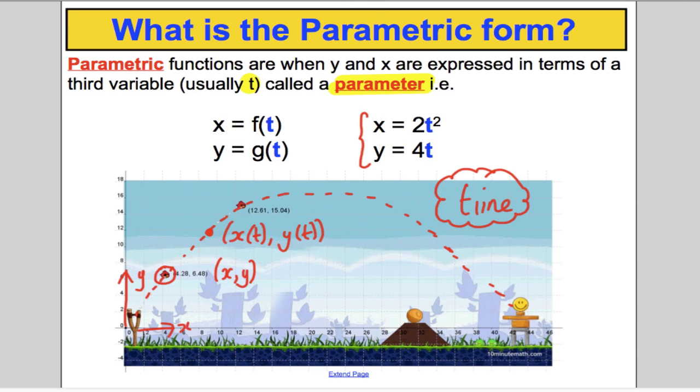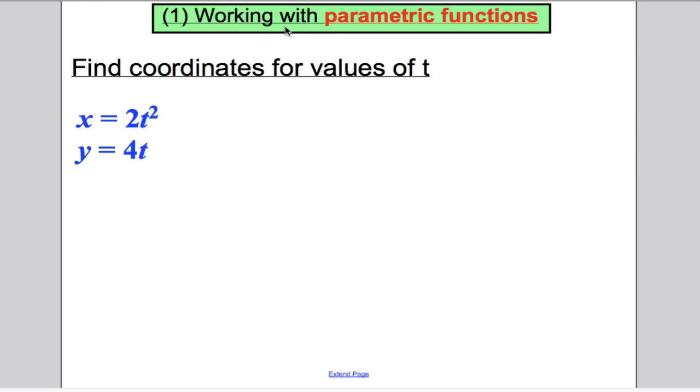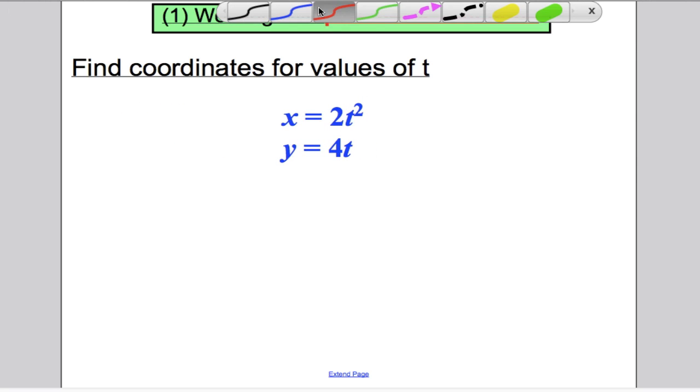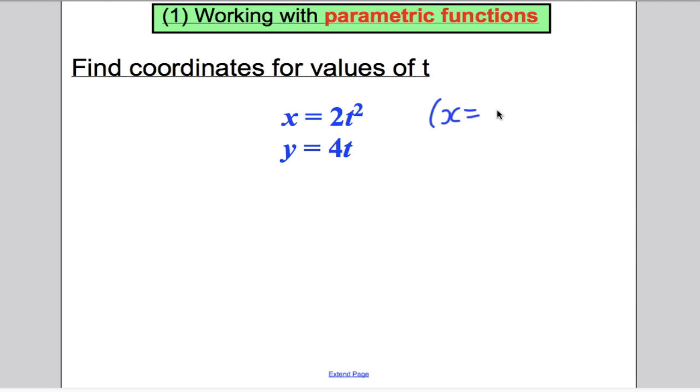Let's introduce some parametric equations. What can we do with these? The first thing we can do with a parametric is we can find the coordinates for different values of t. Here's a parametric set of equations: x is some function of t, f of t, and y is some other function of t, g of t. In this case, x is 2t squared and y is 4t. When t is 0, we can substitute in for x and y and work out that x is 0 and y is 0. That gives us a point to plot.